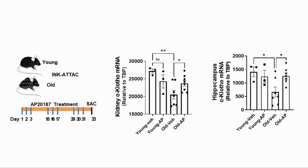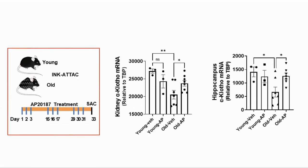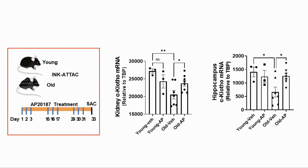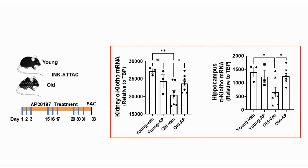The next test was to confirm that removing senescent cells increased klotho expression. This was done in vivo in transgenic mice with a mutation allowing removal of senescent cells when treated with AP20187. Looking at old and young mice, those treated with AP — which have lower senescent cell burdens — had higher levels of klotho.